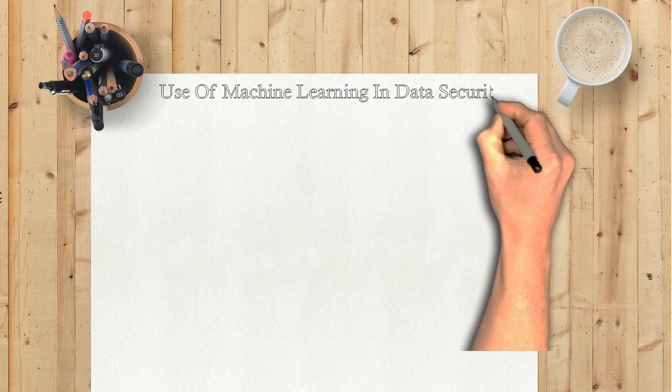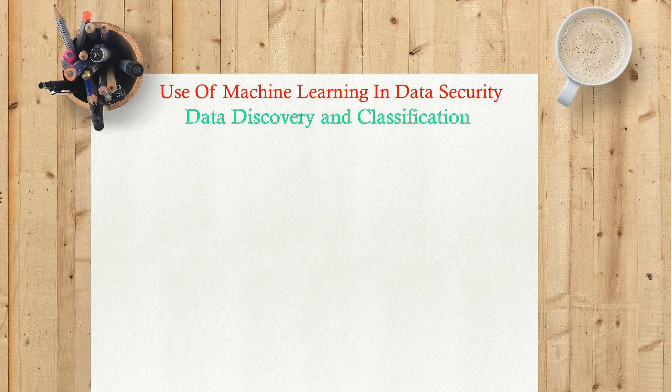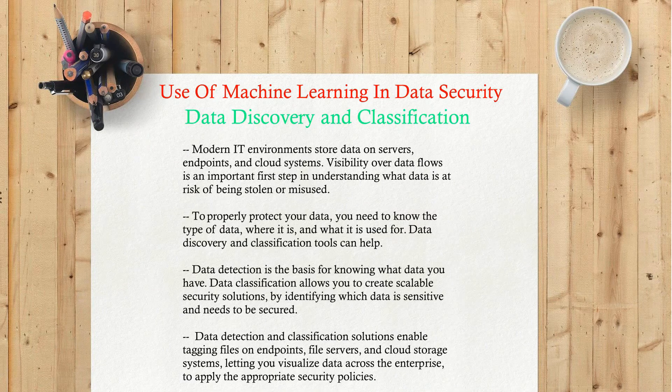Modern IT environments store data on servers, endpoints, and cloud systems. Visibility over data flows is an important first step in understanding what data is at risk of being stolen or misused. To properly protect your data, you need to know the type of data, where it is, and what it is used for. Data discovery and classification tools can help.